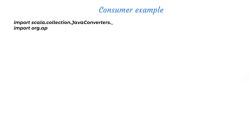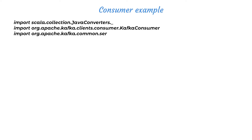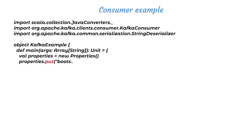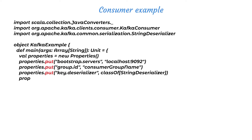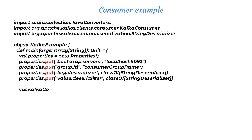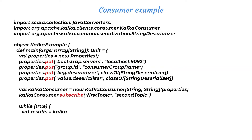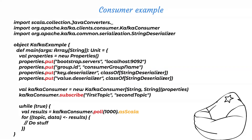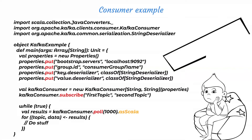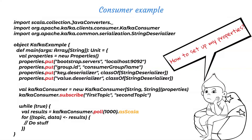So let's write some code. For creating a simple consumer example, you just need to set properties, create a Kafka consumer, and subscribe to the topics. After subscribing to topics, you can poll those messages from those topics and then do some stuff with those results.